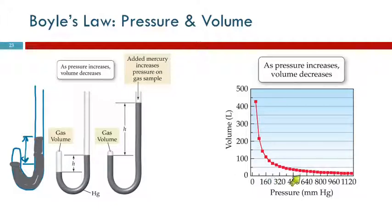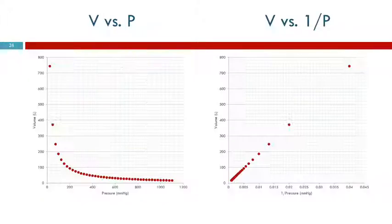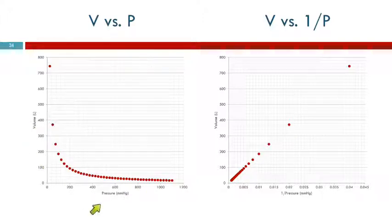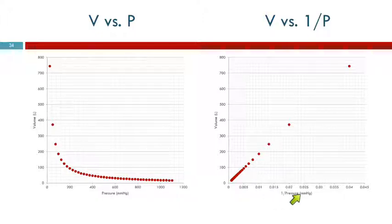Scientists don't like curved graphs because it's nicer to get a straight line — you can do linear regression and get an equation of the line. When you graph volume versus pressure you get a curve, but if instead you graph volume versus one divided by pressure, you get a really nice straight line. That's the inverse relationship.